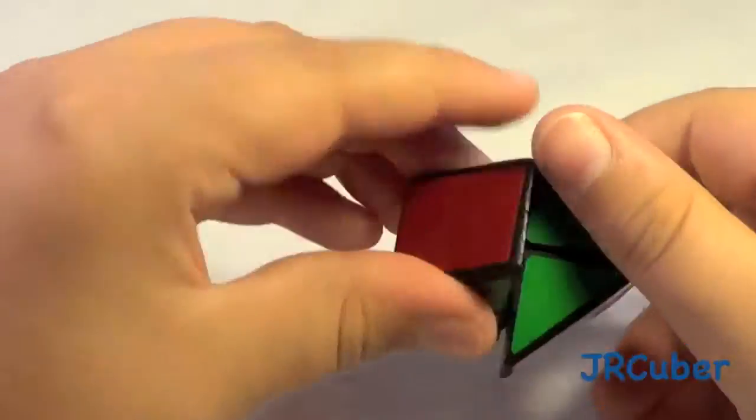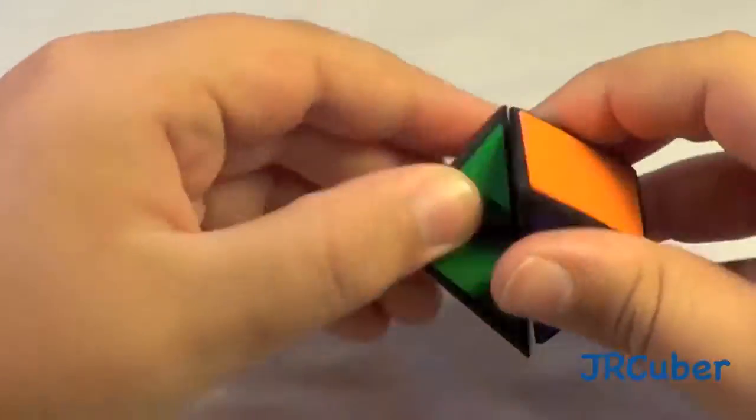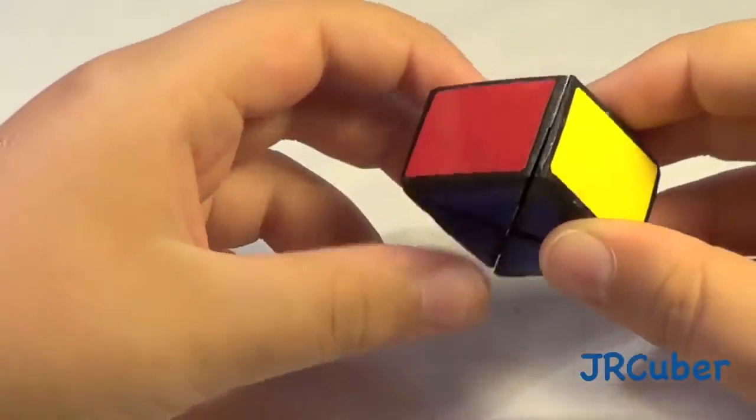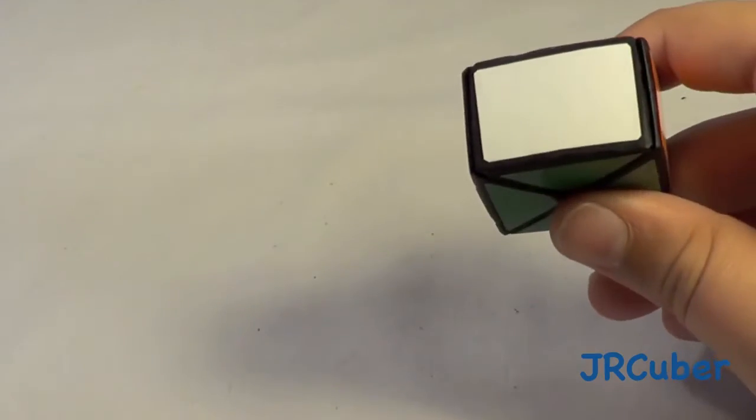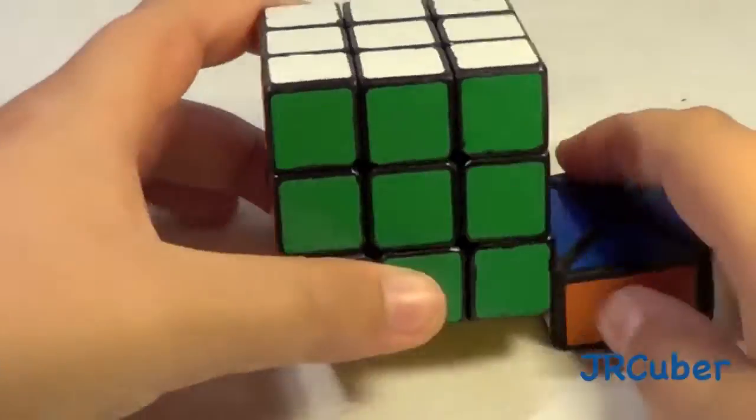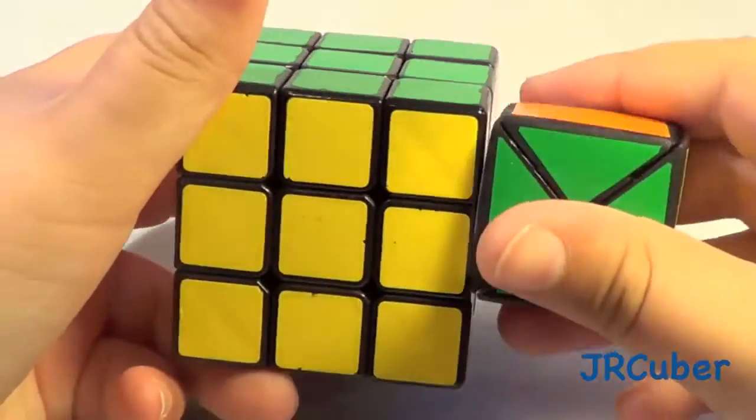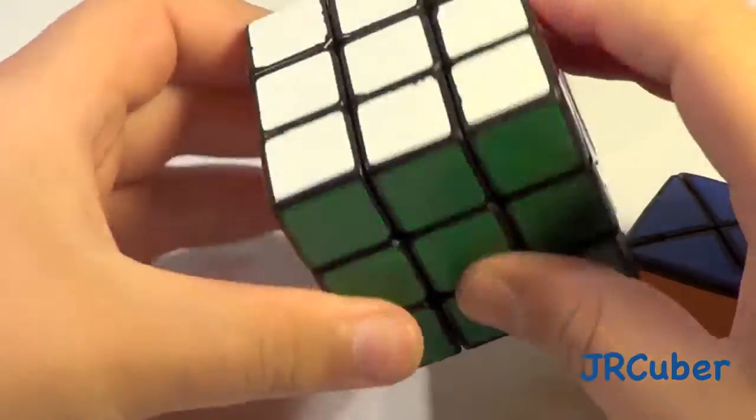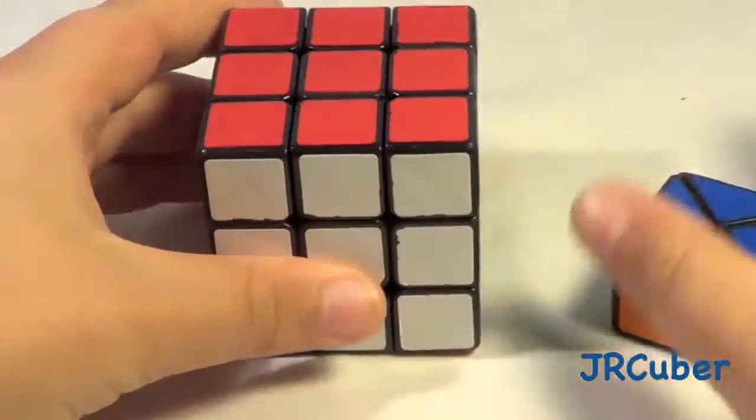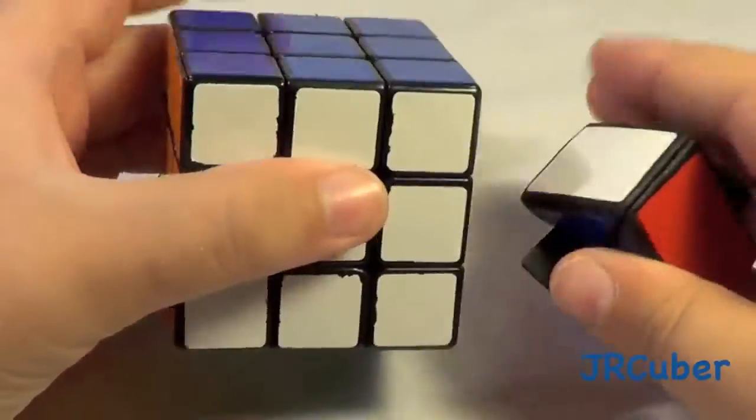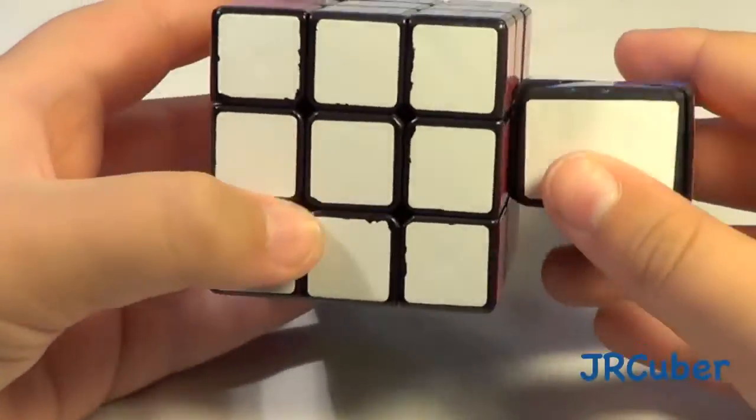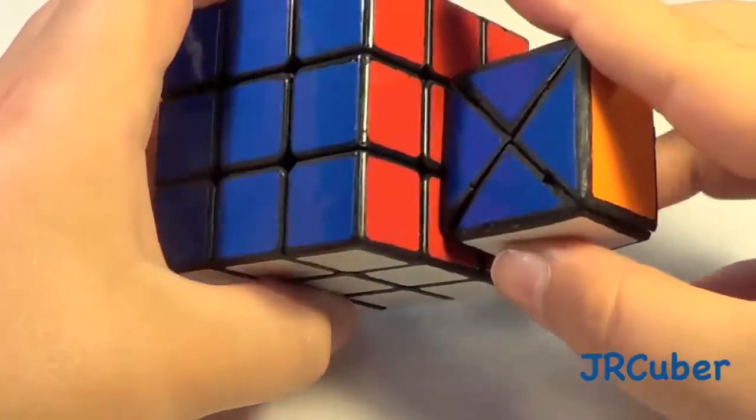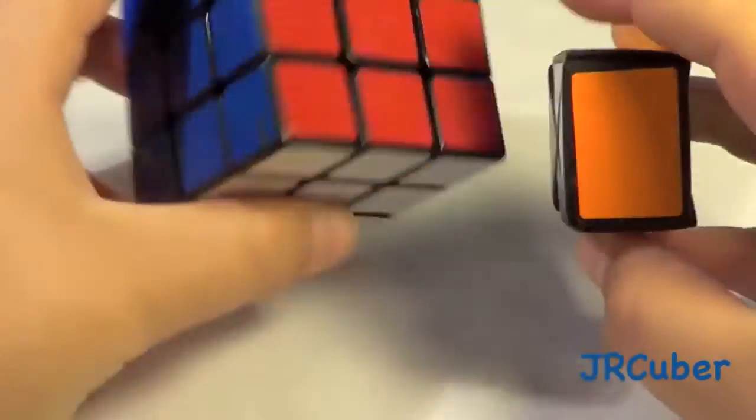And when you scramble it, it looks like you haven't scrambled it. But if you take a closer look on a normal, let's say a normal 3x3, let's just do a size comparison. Here's a standard 3x3. If you look here, if you have white on front and blue on top, red should be on the right. But orange is on the right.